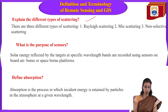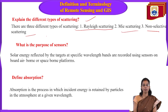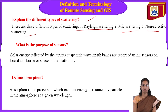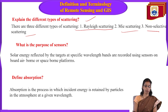There are three types of scattering: Rayleigh scattering (when particle size is smaller than the wavelength), Mie scattering (when particle size is equal to the wavelength), and non-selective scattering (when particle size is larger than the wavelength).